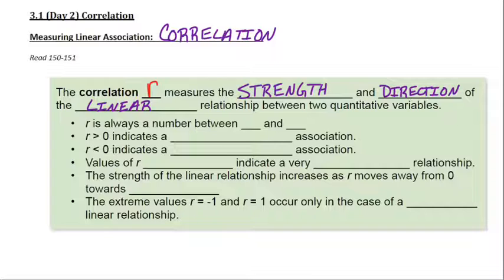Some facts about r. It's always a number between negative 1 and 1. If it's greater than 0, that means there's a positive association. Less than 0 means a negative association.